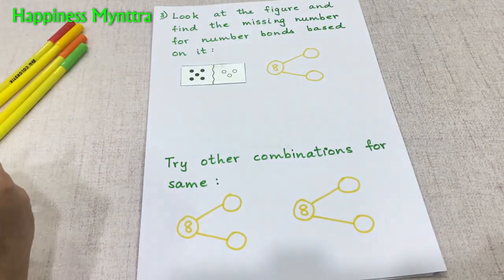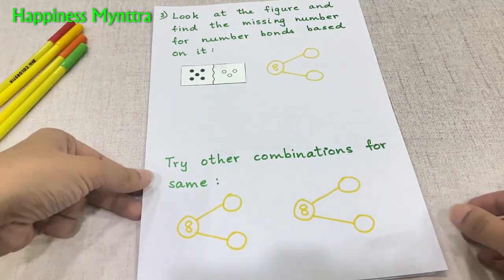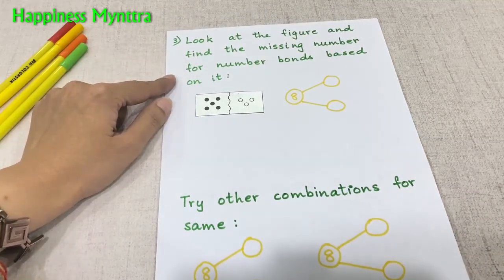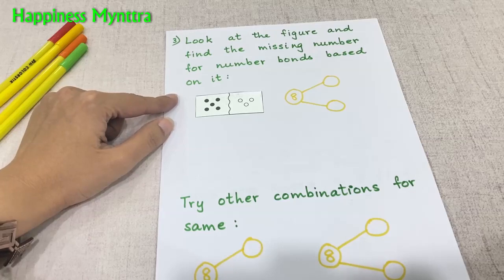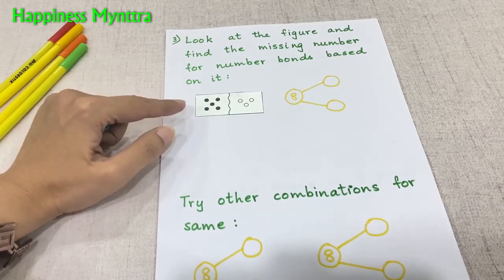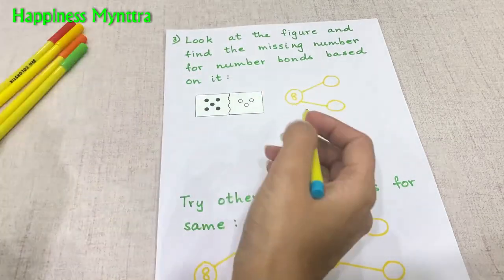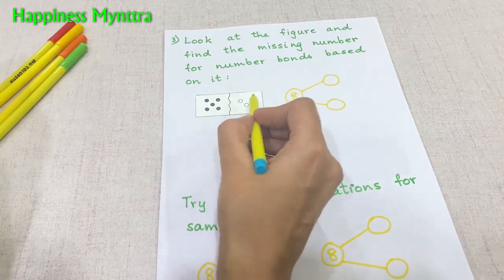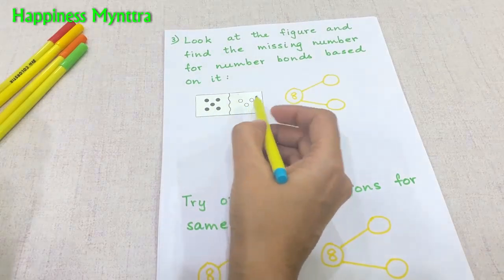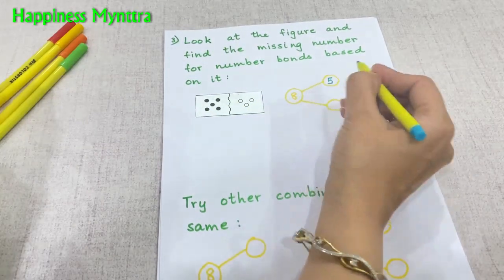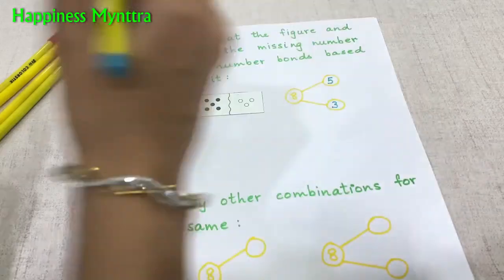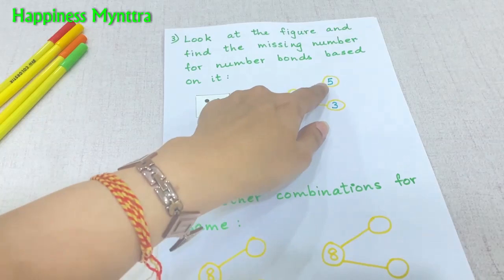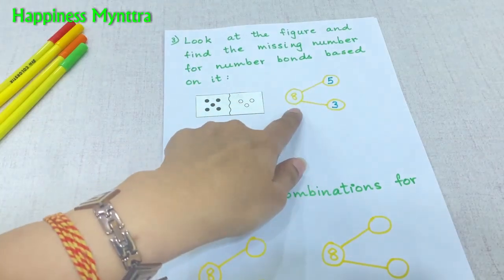Moving on to the next sheet. Look at the figure and find the missing number for the number bond based on this figure. The number bond for 8 — we have 5 here and 3 here. The answer is very simple: they just need to add the two together to give 8. So 5 and 3 gives 8.